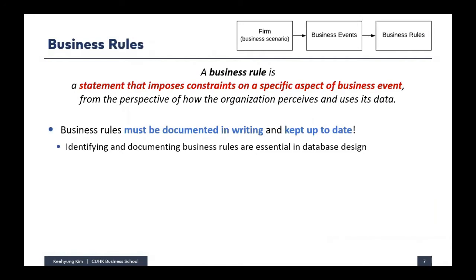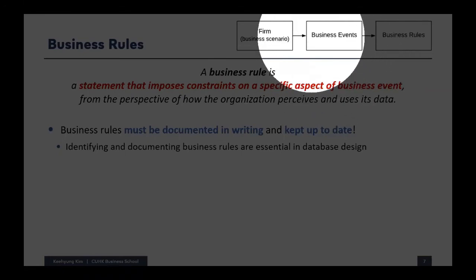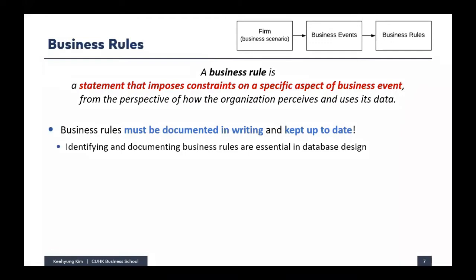Once you identify a business event, the next step is identifying the rules — what rules exist when a business event is happening. A business rule is a statement that imposes constraints on a specific aspect of a business event, from the perspective of how the organization perceives and uses its data. It is always good to document business rules in writing — in a file that all employees and software engineers can access — so that everyone has the same understanding, and it should be kept up to date.